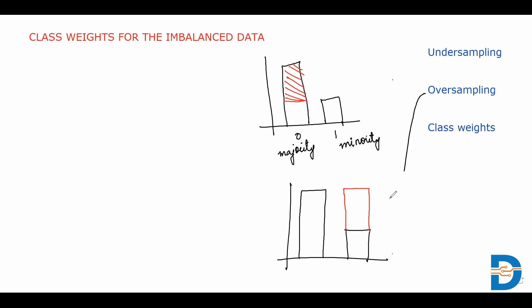This is called over-sampling. In both cases we balance the data and then train the model. Over-sampling is highly preferred because we don't want to miss or lose any information, which is why we don't prefer under-sampling. Over-sampling has its own advantages and disadvantages.